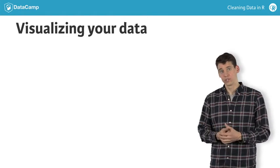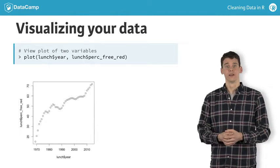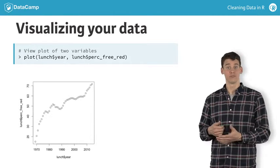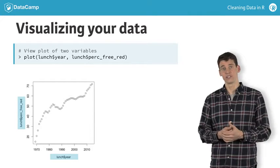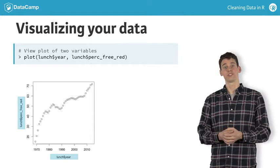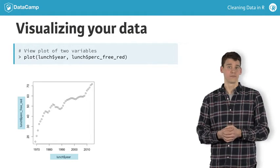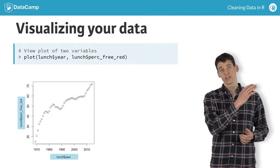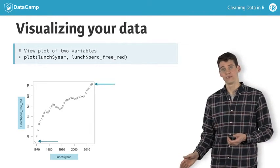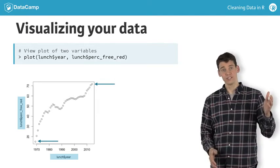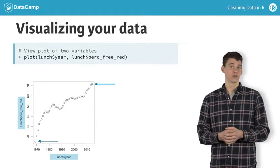Finally, we can produce a scatter plot with the plot function to look at the relationship between two variables. In this case, we clearly see that the percent of lunches that are either free or reduced price has been steadily rising over the years, going from roughly 15 to 70 percent between 1969 and 2014.